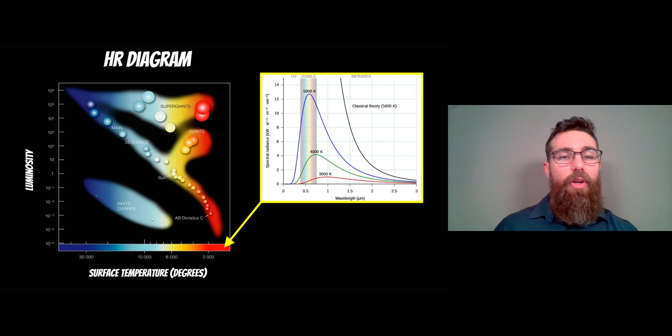So the surface temperature is fairly easy for us to measure. We can basically look at the spectrum of a star and depending on where it peaks, we assume that they are black body like, so they behave fairly similar to a black body, so therefore their color corresponds to their temperature.